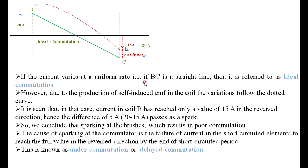If the current varies at a uniform rate from B to C in a straight line, then it is referred to as ideal commutation. However, due to the production of self-induced EMF in the coil, the variation follows the dotted curve. Because if there is a change in the current, it is an action of inductance. The property of inductance is that it opposes the change of current in the conductor.